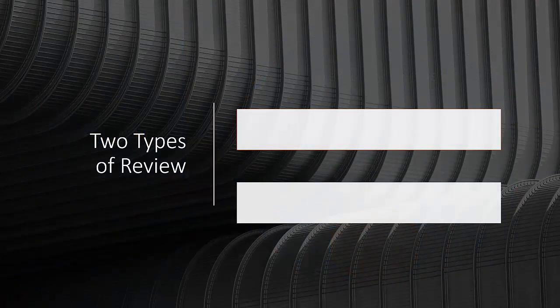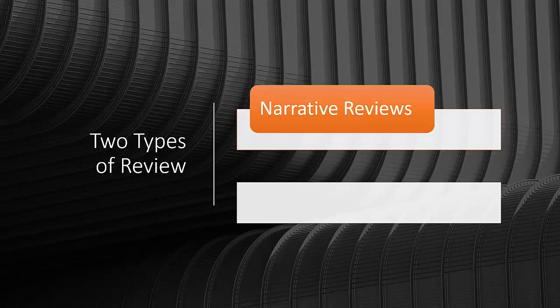Another way of discussing review that you may come across in the literature is to distinguish between a narrative review and a systematic review. A narrative review is used when a meta-analysis is not possible and so has all of the stages of a systematic review but does not end up with a meta-analysis. This can happen, for example, if you do not find sufficiently similar papers addressing your particular research question — something you will need to discuss with your supervisor when filtering down your papers.